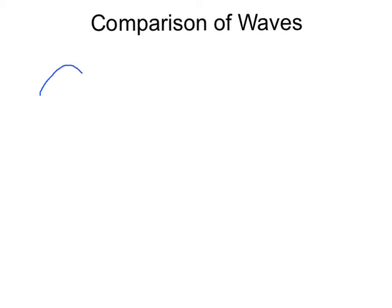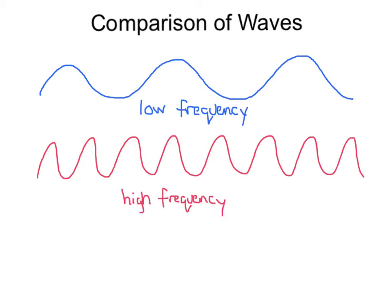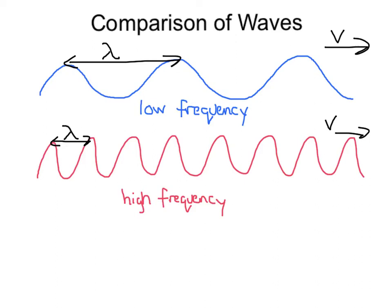Let's compare two waves. The blue wave has a low frequency, and thus is not making many crests per second. Here is a higher frequency red wave — much more frequent, many more waves per second. You can see these two waves look different, especially if we look at the wavelength. The low frequency wave has a distance from crest to crest that is very far apart — these waves have a longer wavelength. The higher frequency waves have a much smaller distance from crest to crest, giving a much smaller wavelength. Assuming these waves travel at the same velocity, we can conclude that low frequency waves have a larger wavelength, and higher frequency waves have a smaller wavelength.